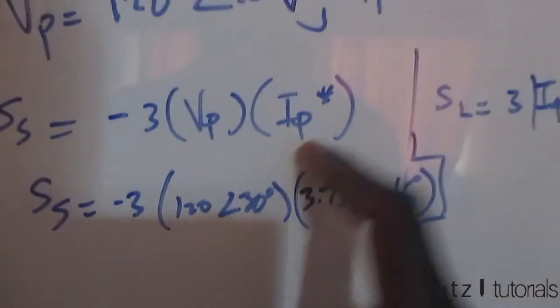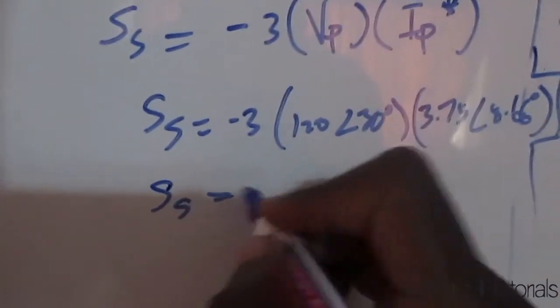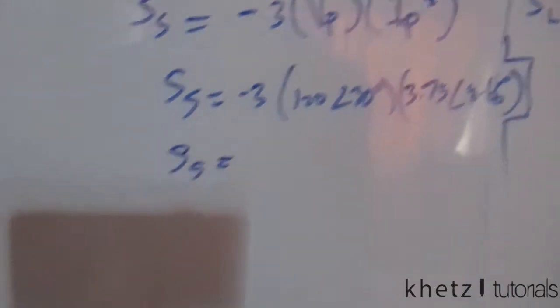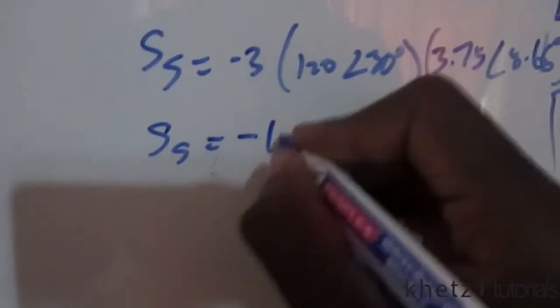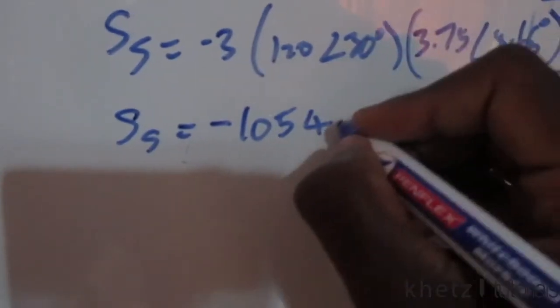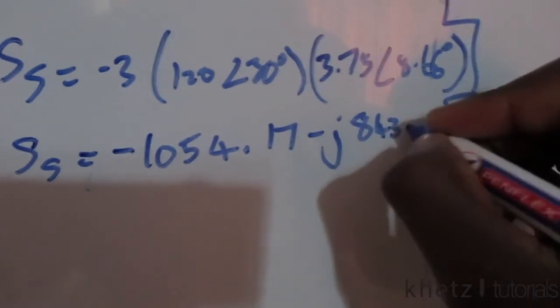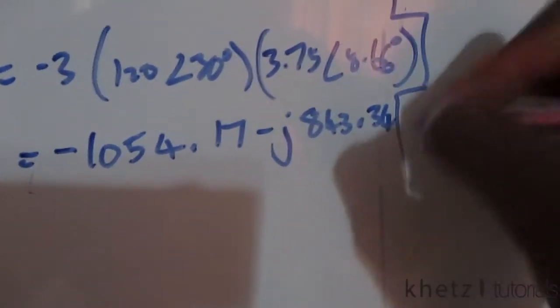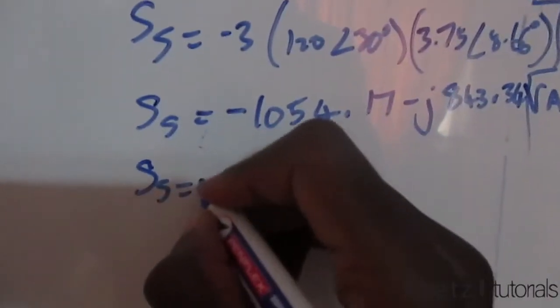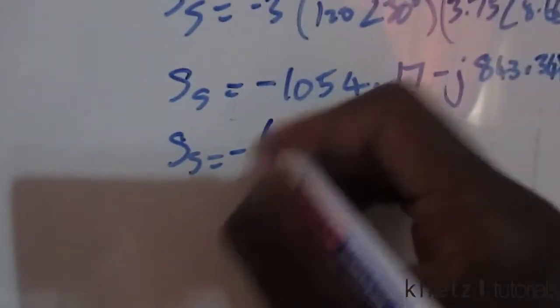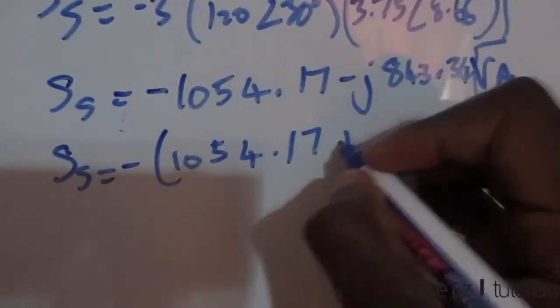Putting this into your calculator should give you a value of -1054.17 - j843.34 VA. Factoring out the negative sign as they did in the textbook, you get -(1054.17 + j843.34) VA. That is your answer for the complex power at the source.